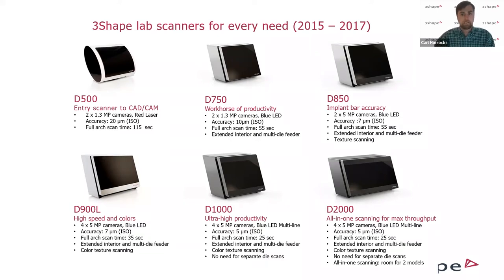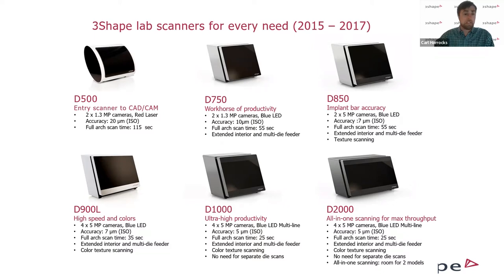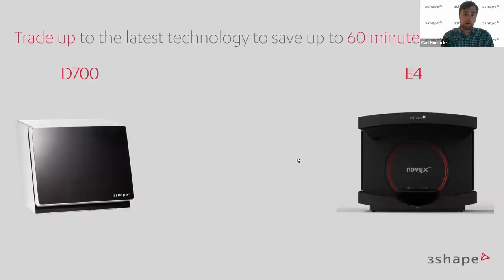Those are the three generations of 3Shape lab scanners: the early d700s and d800s, then the d750s, d850s, d1000, d2000 — all closed scanners where you can't fit a full articulator model. Then in 2017, the e-scanners arrived as open lab scanners, very efficient in scan times and accuracies, and very flexible when it comes to full articulator scanning. Let's compare one of the older generation lab scanners to the new NOVOX E4.